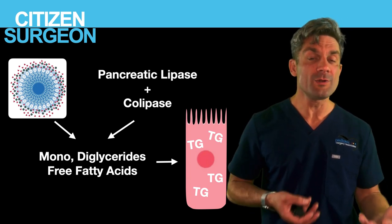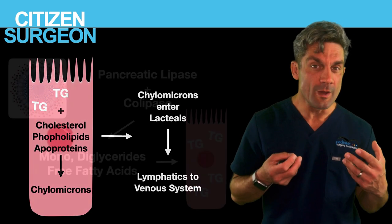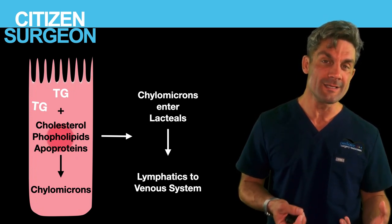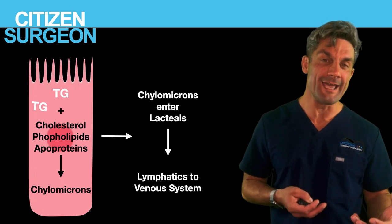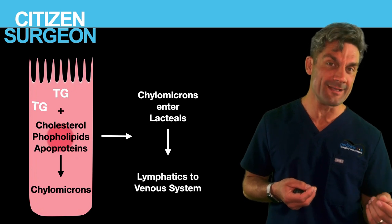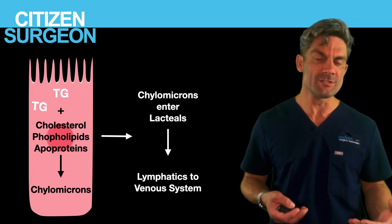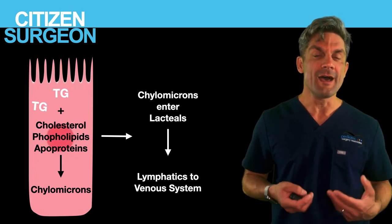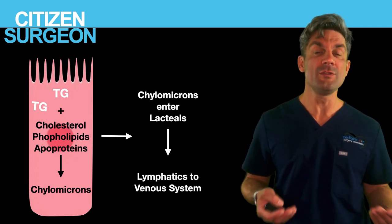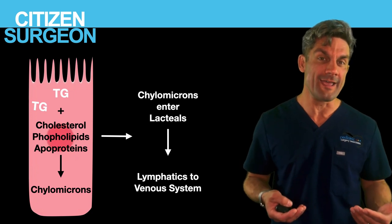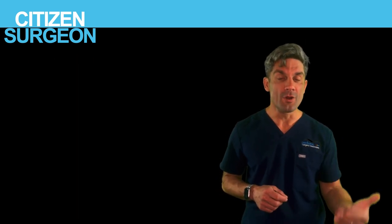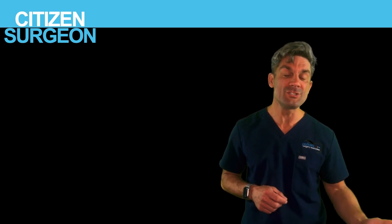Within the enterocyte, once the triglycerides are reformed, they combine with cholesterol, phospholipids, and apoproteins to form chylomicrons. Chylomicrons leave the enterocyte through lacteals — small lymphatic vessels — and travel through the lymphatic vessels, eventually reaching the cisterna chyli. From there they travel up the thoracic duct on the left side to the junction of the internal jugular vein and the left subclavian vein, where they re-enter the venous circulation. That's how fats, proteins, and carbohydrates are digested and absorbed.